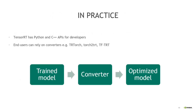TensorRT has Python and C++ APIs for developers to incorporate these technologies into their own applications. For end users, a lot of the work has been already done and you can simply rely on converters. The main idea of a converter is that you take a model trained with your favorite deep learning framework, run it through a converter where all these optimization steps have been abstracted, and you end up with an optimized model that you can simply deploy on your target platform.